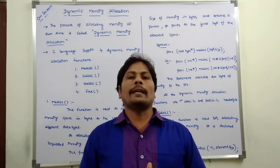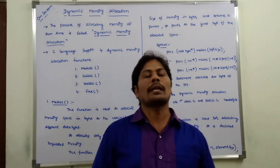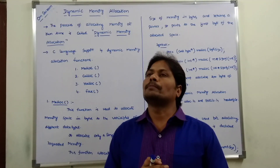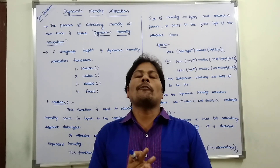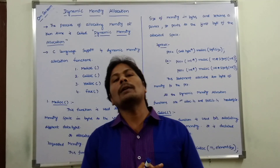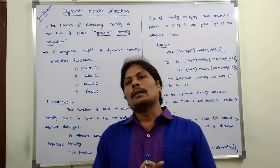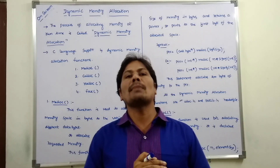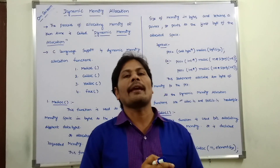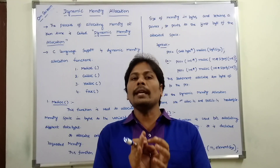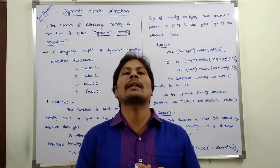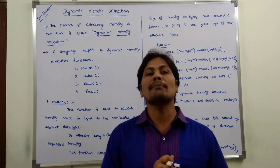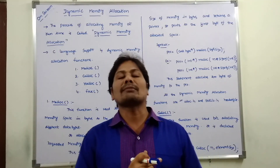Today I am giving a lecture on dynamic memory allocation in C language. The process of allocating memory at runtime is called dynamic memory allocation. There are two types of memory allocations: first is compile time memory allocation, also called static memory allocation, and second is runtime memory allocation, called dynamic memory allocation.